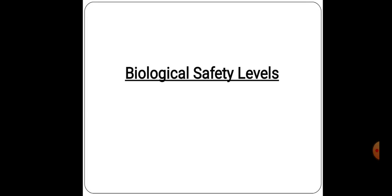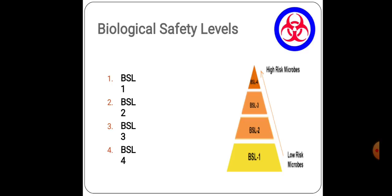Biological safety has four levels: BSL-1, BSL-2, BSL-3, and BSL-4. BSL-1 involves low risk microbes, whereas BSL-4 involves high risk microbes.